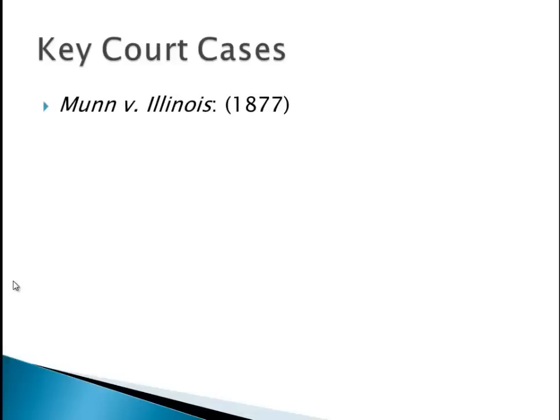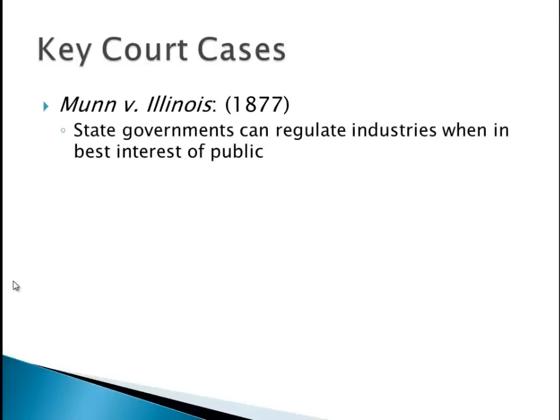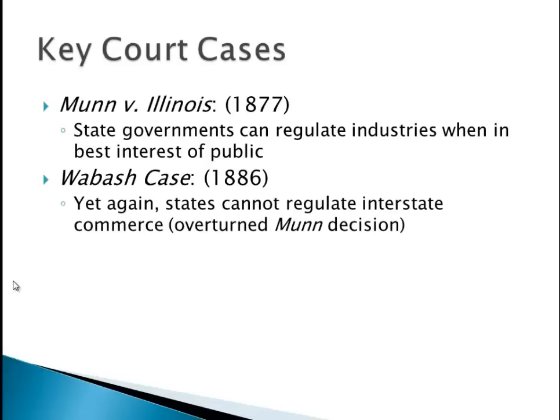Two key court cases: Munn v. Illinois — the Grange helped influence this. State governments can regulate industries when in the best interest of the public, and this was related to interstate commerce. Then the Supreme Court realizes about nine years later that they can't do that — they established in Gibbons v. Ogden that interstate commerce is only for the federal government, not the states. So the Wabash case overturns Munn v. Illinois.